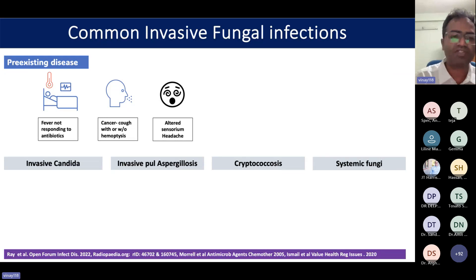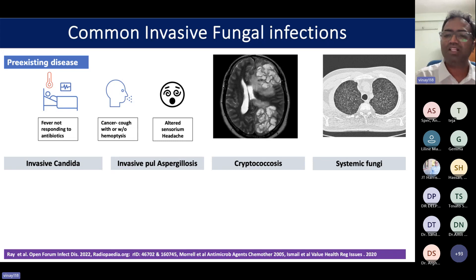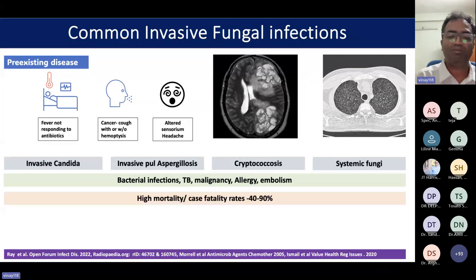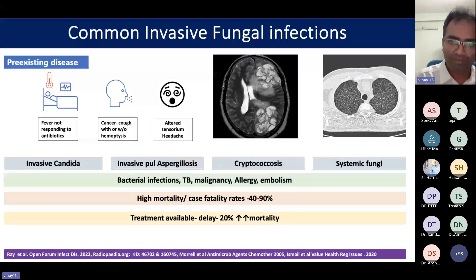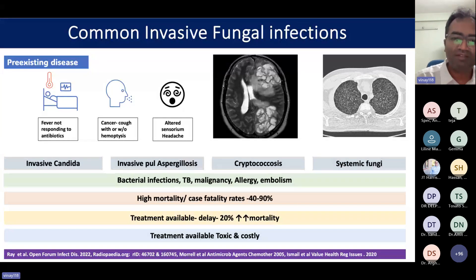There are common invasive fungal infections like invasive candida, invasive pulmonary aspergillosis, cryptococcus, and systemic fungal infections. Many of these have non-specific clinical signs and symptoms — they don't respond to antibiotics and even on imaging they mimic bacterial infections, TB, malignancy, allergy, and embolism. They have very high mortality, with case fatality rates ranging from 40 to 90%. Treatment is available and effective, but any delay increases mortality, and in countries like India, the treatment is extremely expensive.